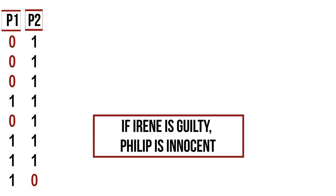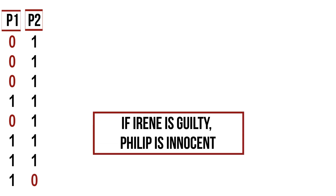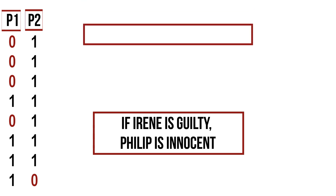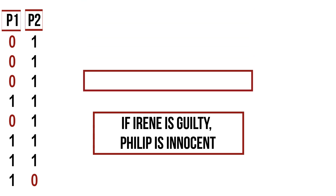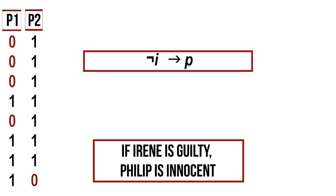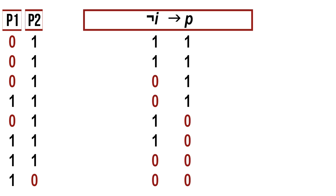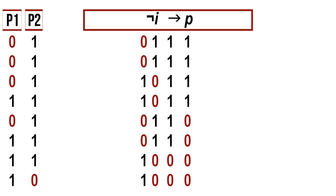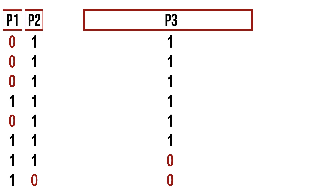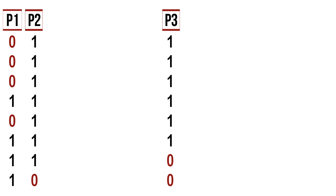The next and final premise is: if Irene is guilty, then Philip is innocent. Translating this into propositional logic, we know that if Irene is guilty, then Philip is innocent. We evaluate this formula in all situations, assigning truth values in the same order as before, evaluating not I, and then evaluating the formula under the main connective. We have now evaluated all three premises for all possible situations.